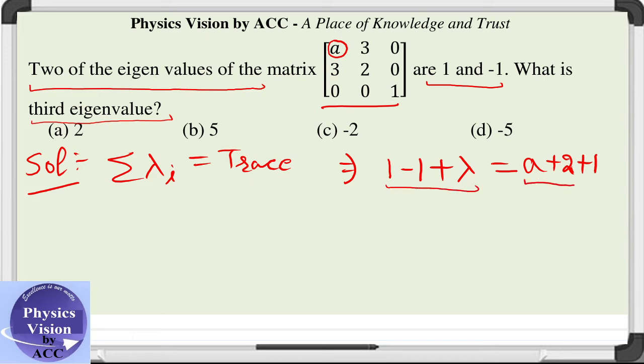So this is sum of the eigenvalues and this is sum of the diagonal elements. Hence we got one equation which says lambda is equal to a plus 3.